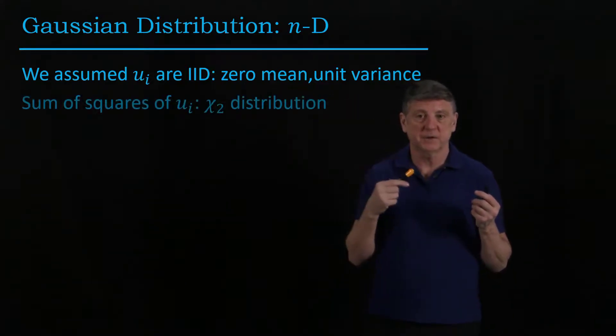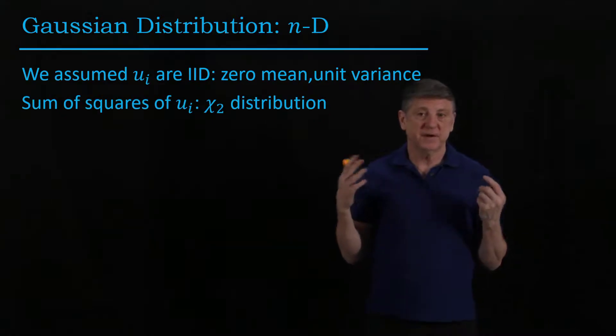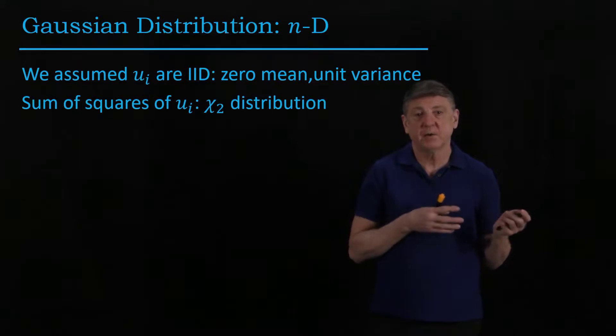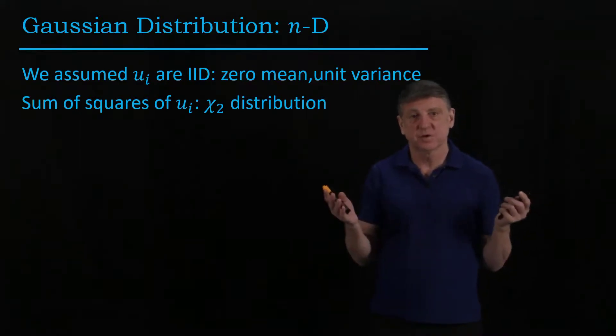Well, that means that these variates have to follow a chi-square distribution. Chi-square distributions pop up every now and then in statistics, and this is one of the places they pop up.